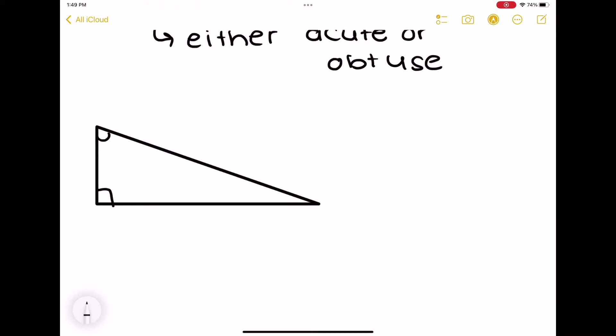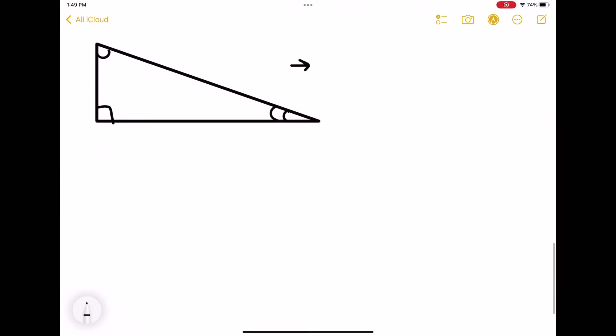Now the last triangle I'll be discussing in this video is this triangle called a scalene triangle. Now we've had one of the triangles where all of them are the same, all the angles, and one where two of them are the same. So this one, all three of them, so all the angles and sides, are different. And as you can see here, it has one right angle and then two acute angles.